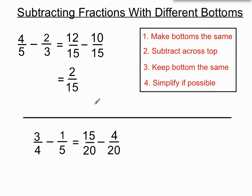Now that we've ticked off making the bottoms the same, we can subtract across the top. 15 minus 4 makes 11. And we'll keep the bottoms the same. We should just check to see if we can simplify at all. No, I can't think of anything other than 1 that goes into 11 and 20. So we're done.